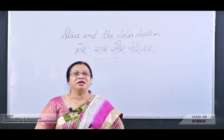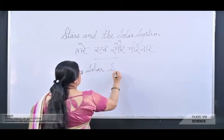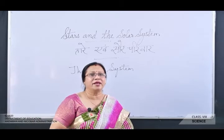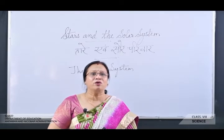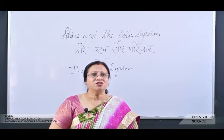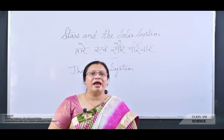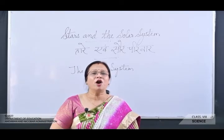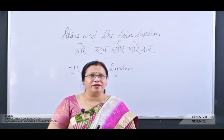Now, today's topic: the solar system, which we also call the solar family. The sun and the celestial bodies revolving around it together form the solar system or solar family. It consists of large numbers of bodies such as planets, comets, asteroids and meteors. These objects revolve around the sun due to gravitational attraction between them.